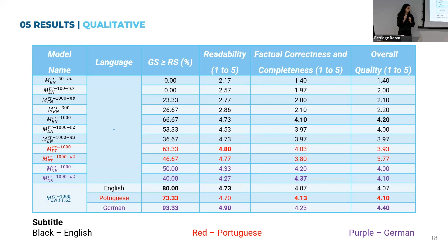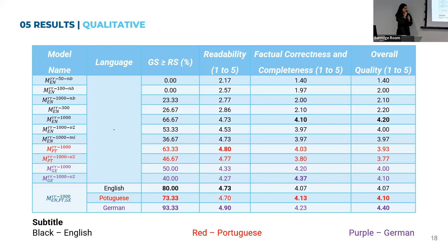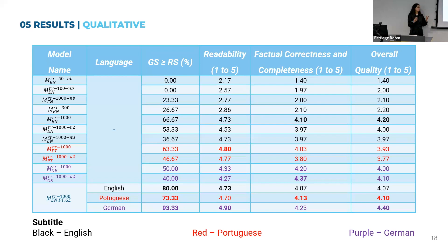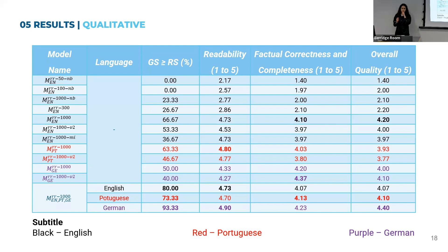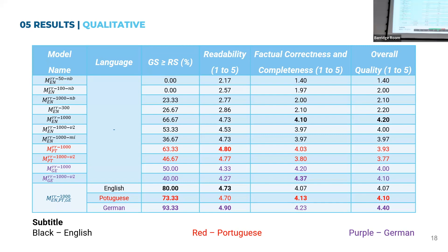Regarding the multilingual model, it also has the best overall qualitative results, which is probably because the MT5 base model has shared representations across languages. By jointly fine-tuning in English, Portuguese, and German, the model was able to capture cross-linguistic information and produce higher quality summaries. Additionally, MT5 and its checkpoints are able to apply language transfer learning in summarization — knowledge learned during English summarization was transferred effectively to Portuguese and German summarization.